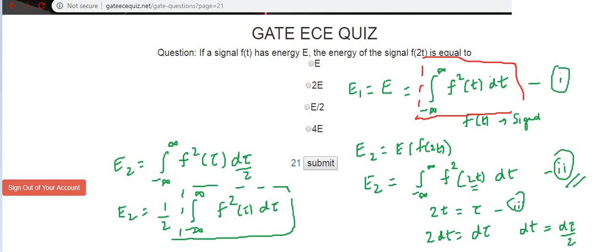It doesn't matter whether we have T or tau. Both are similar expressions. The new energy E2, which is energy of F of 2T, will be E by 2. So this term is E. We have additional 1 by 2, so this is E by 2. Hence, the correct answer is E by 2.